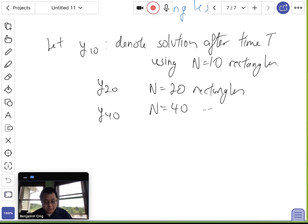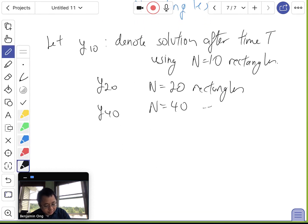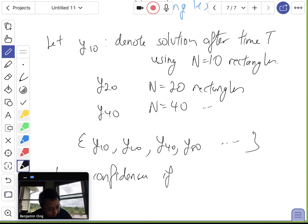So, in scientific computing, we have confidence in our solution if this sequence, as I refine my number of intervals. So if my sequence y10, y20, y40, y80, so on. If this sequence converges, so we have confidence, if the sequence yi converges to some number y tilde. As I refine the number of intervals, then the hope is that my solution converges to some y tilde, and hopefully, if we did things correctly, y tilde should be equal to y hat.